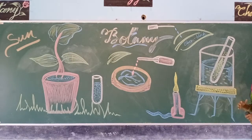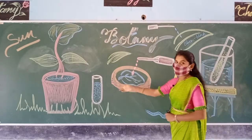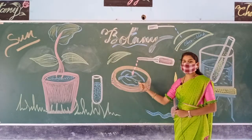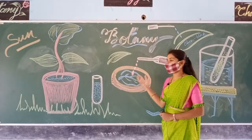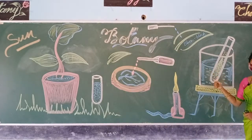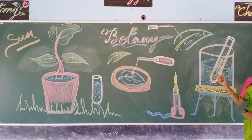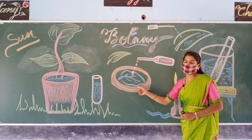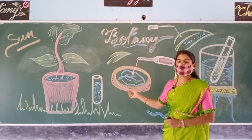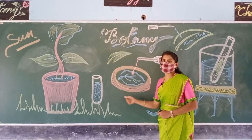Once boiled for 15 minutes, take out the test tube, remove the leaf, and place it in a petri dish. The leaf has turned pale white, meaning all the chloroplast and chlorophyll content has mixed with the spirit. The spirit, which was transparent before, turns green after boiling, while the leaf turns pale white — everything except the starch has evaporated or dissolved into the spirit.